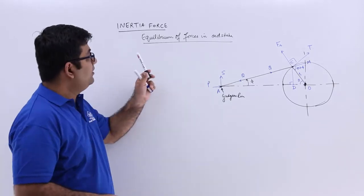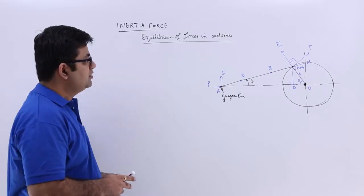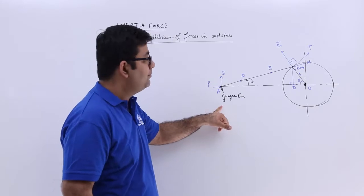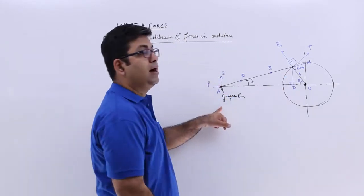Now let's talk about the equilibrium of forces in outstroke in a slider crank chain. So this is how it will look like. This is the gudgeon pin of the piston, this is the crank pin C.